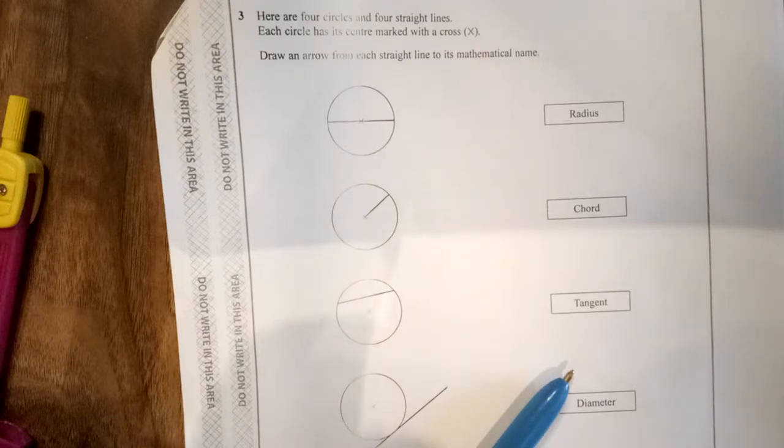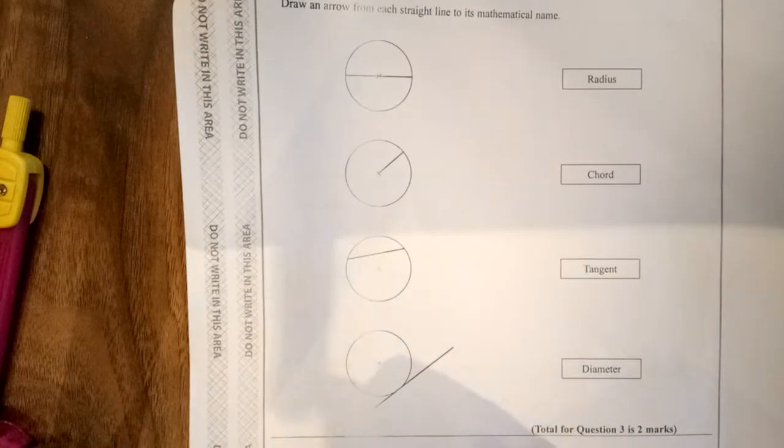Four circles and four straight lines. Each circle has a center marked with a cross. Draw an arrow from each, so link them up essentially.